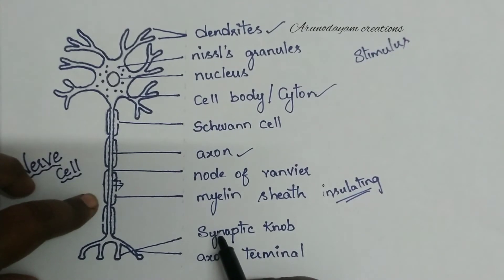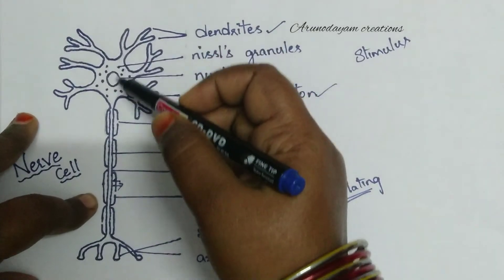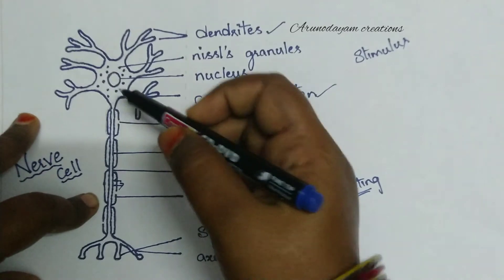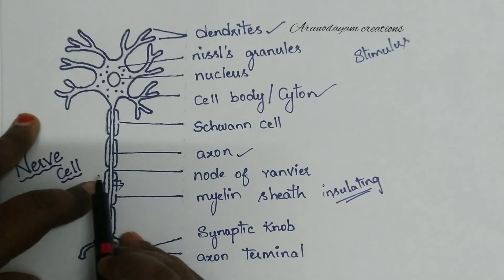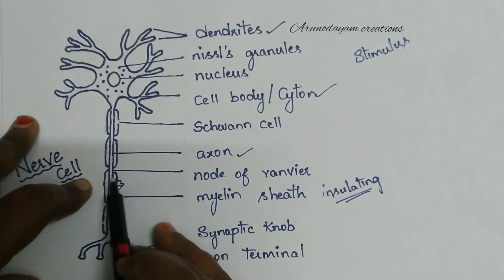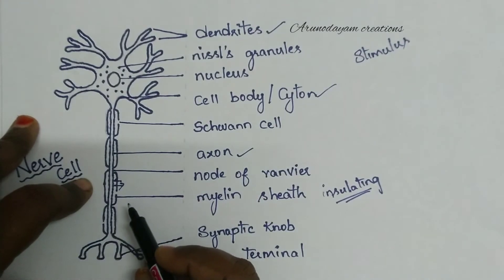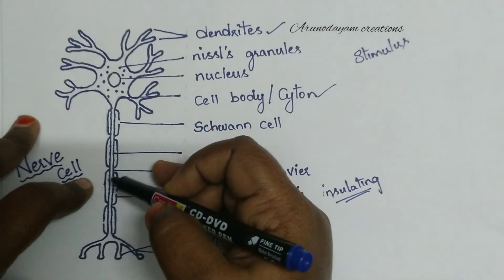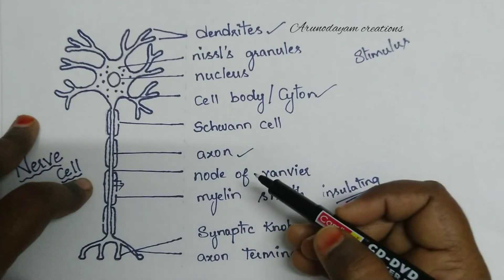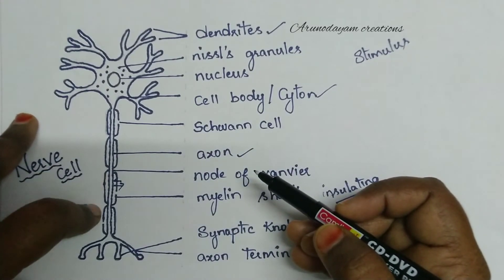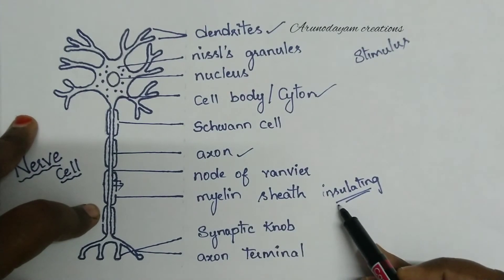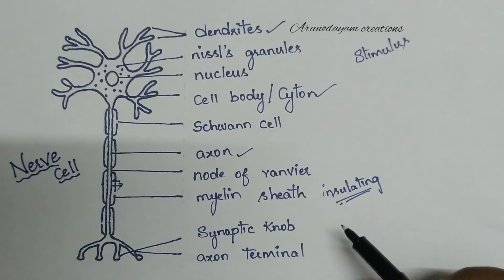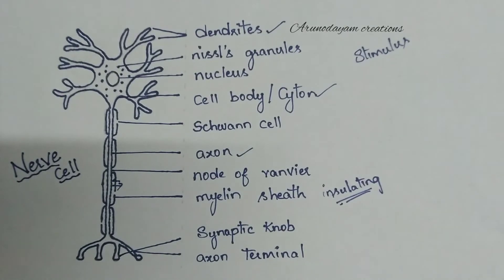The myelin sheath will not allow leakage of information passing through the axon. It prevents the information from escaping outside the axon, insulating and stopping any leakage. That is the function of the myelin sheath.